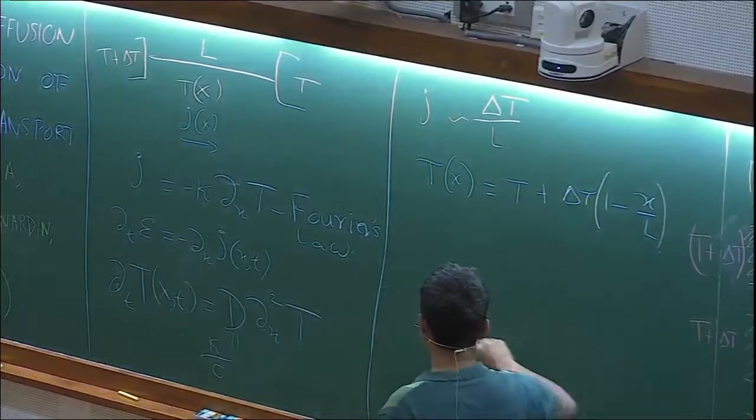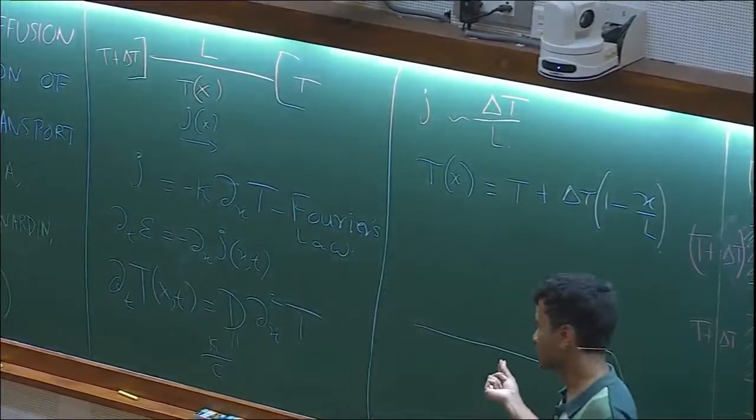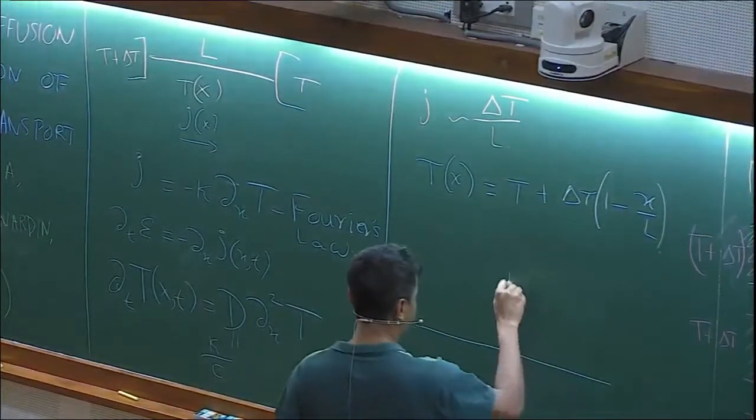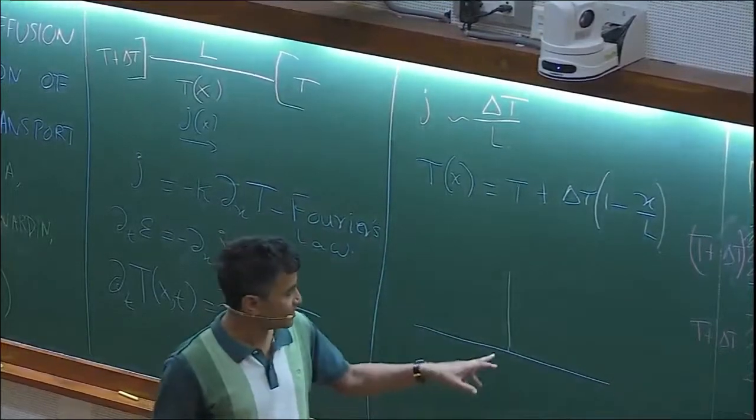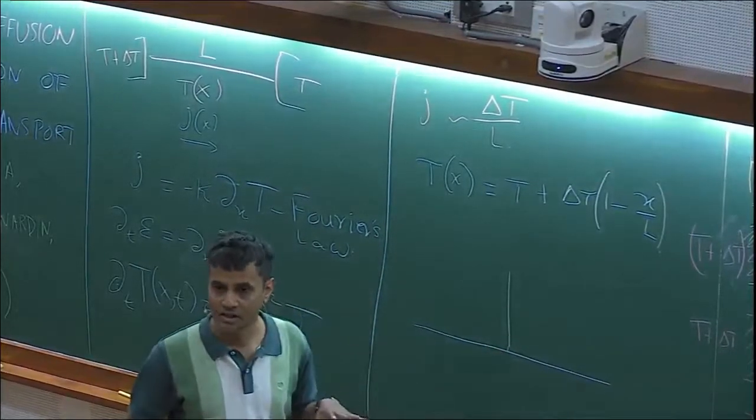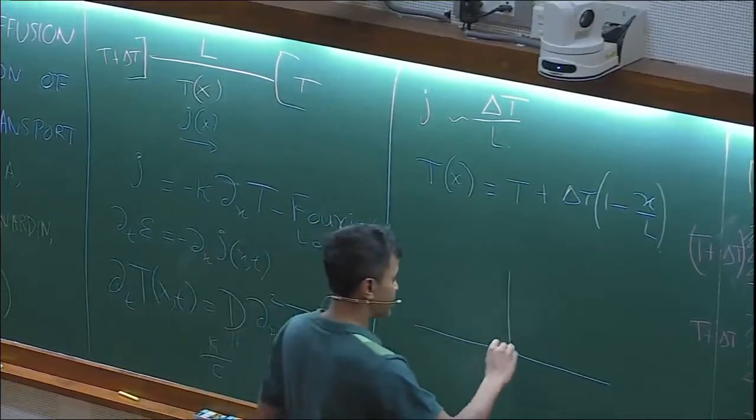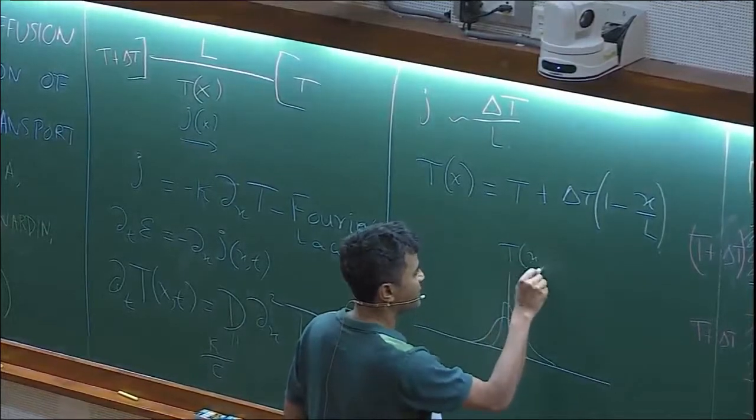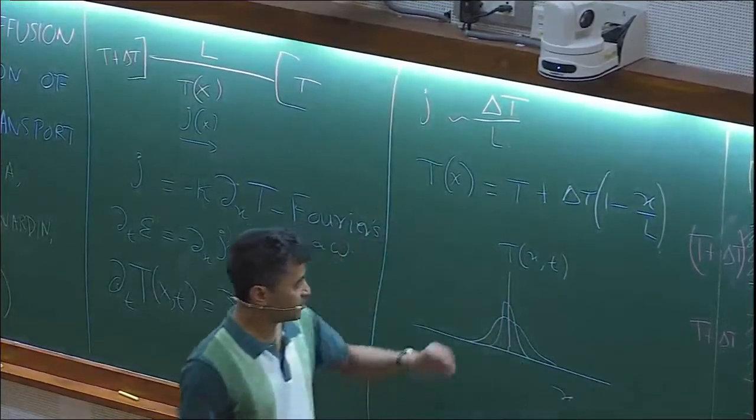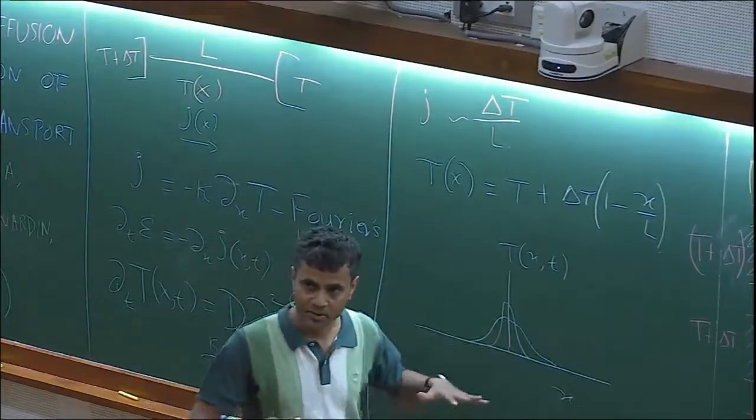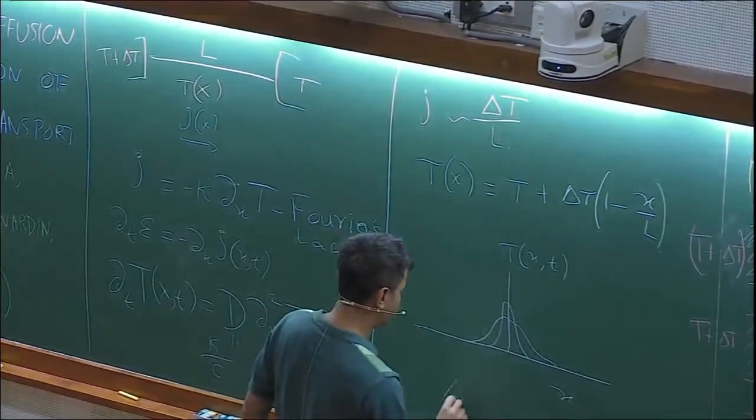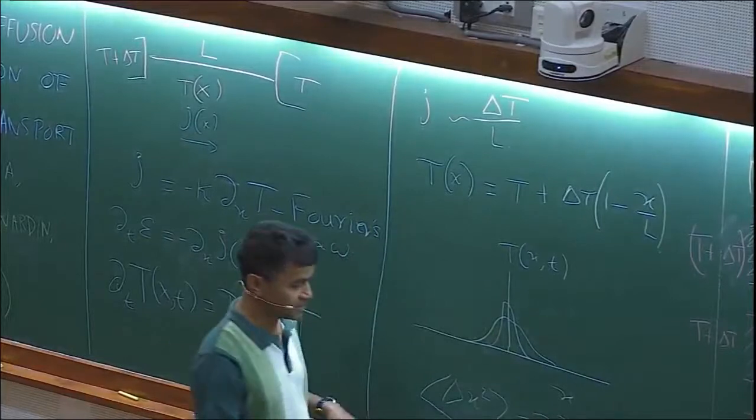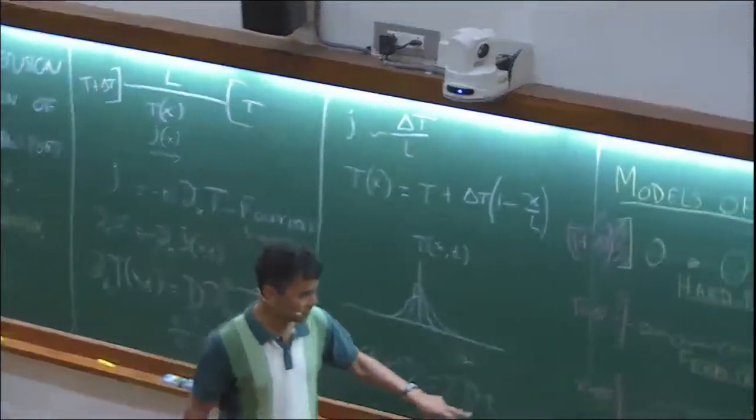There are some other things that follow from the fact that heat spreads diffusively. For example, if you take a rod and dump in some energy at some local point, like putting a laser beam locally, initially you have a lot of energy here. If you ask how does the temperature spread in time, it's very hot here, and the temperature spreads like a Gaussian distribution as a function of X at different times. It spreads diffusively.